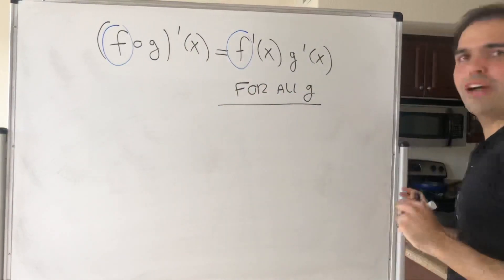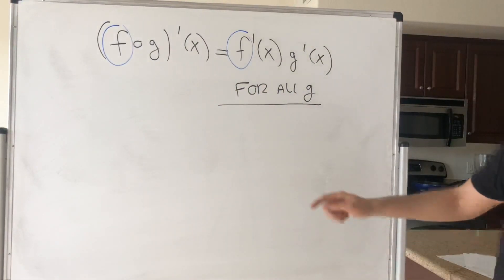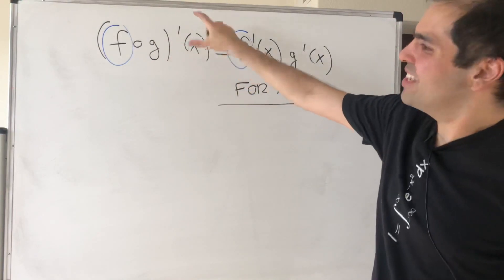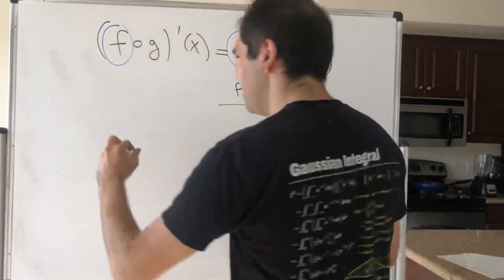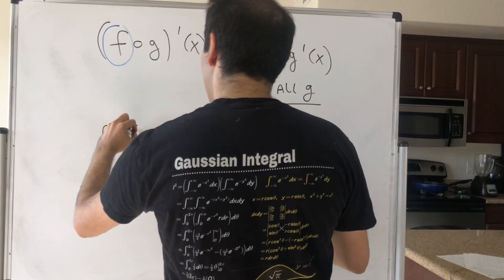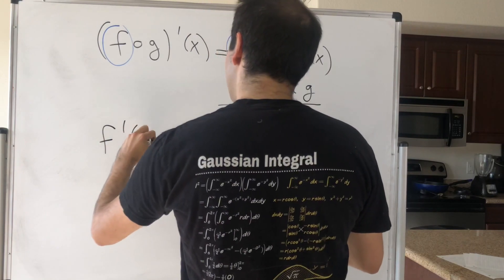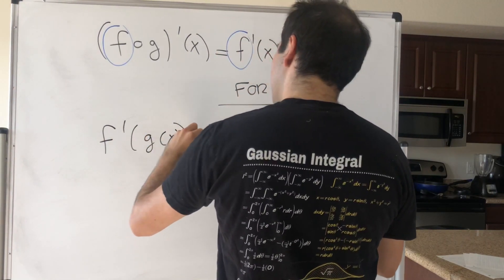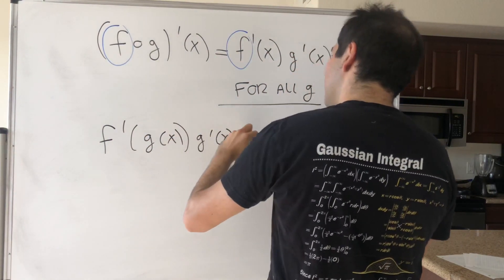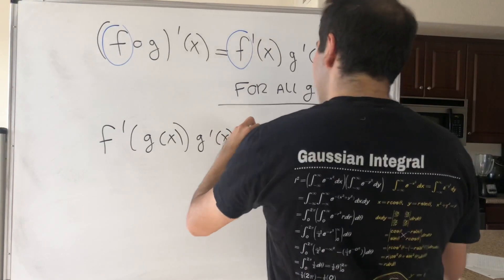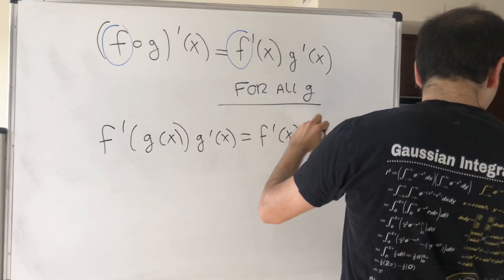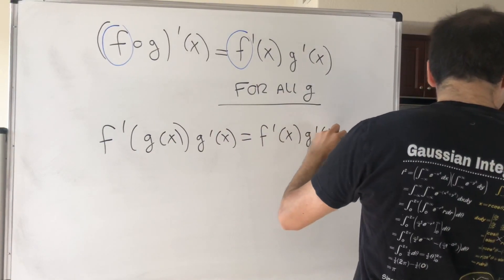It turns out the answer is quite interesting, so let's actually use the chain rule on the left-hand side. Then what we get is f prime of g of x times g prime of x equals f prime of x times g prime of x.